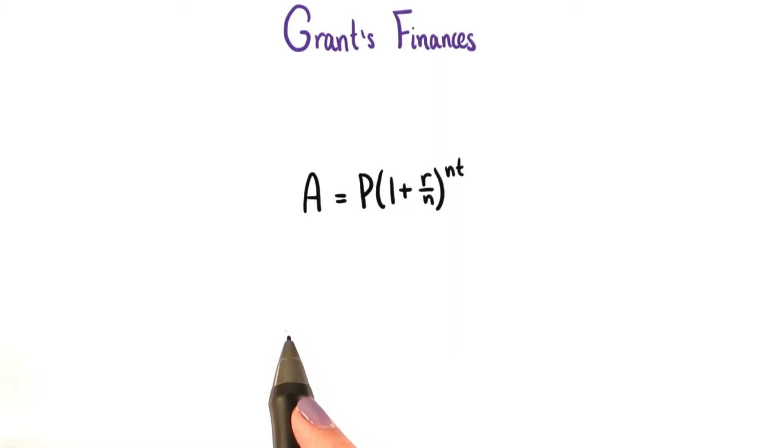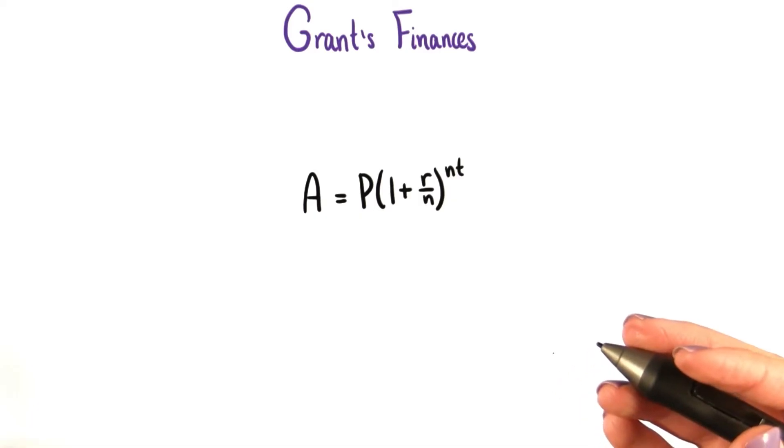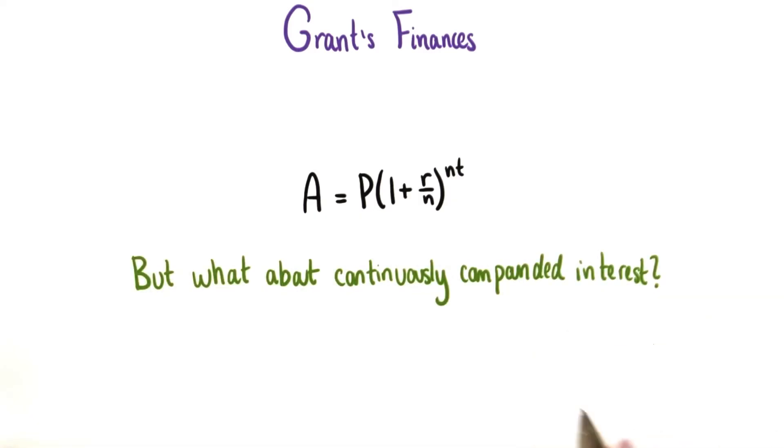We've had n equals 1, 2, 3, 4, and 12. And presumably, we could have interest compounded even more frequently than this.